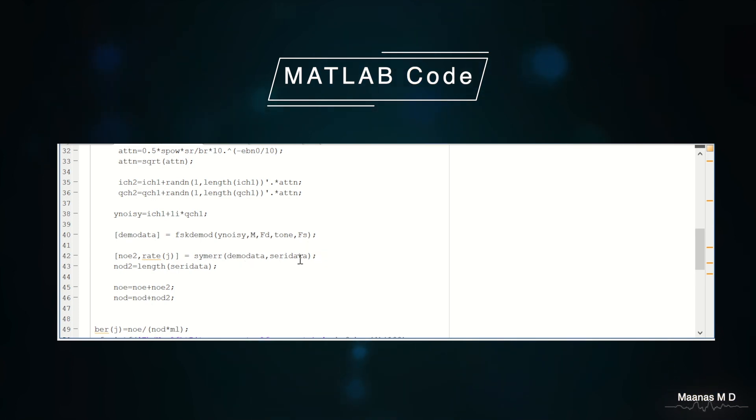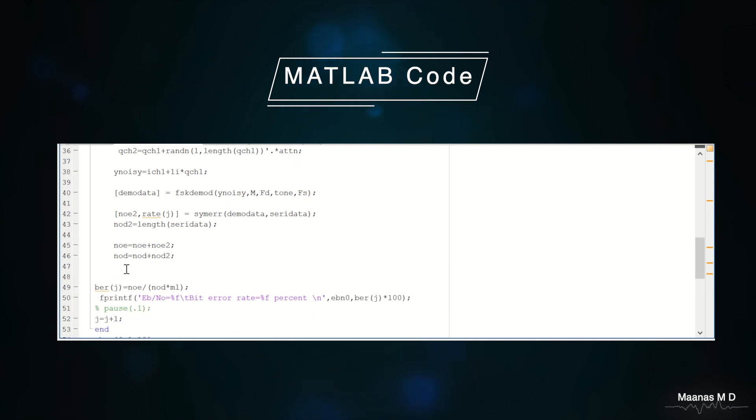Since the serial data is the data which is originally sent and demod data is the data which is received after modulation and demodulation, it computes the error between them. From this we get the rate at which the error appears and the number of errors.